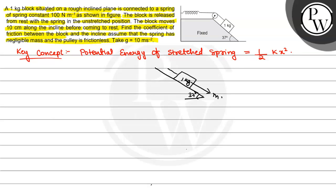Here, Mg sin 37 will act downward. Mg cos 37 acts perpendicular to the incline. Here, it will be normal.